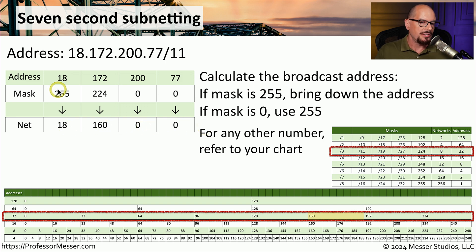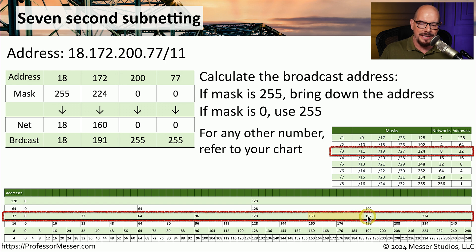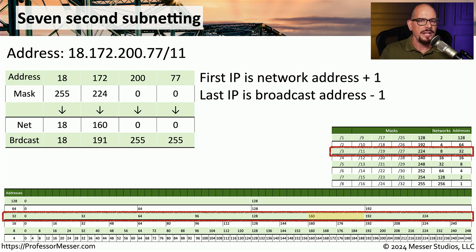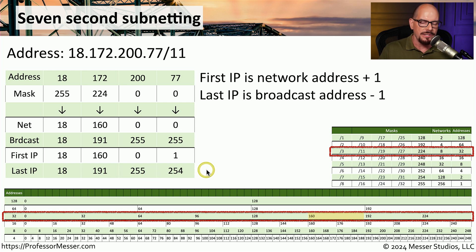To calculate the broadcast address: if the mask is 255, bring down the address; if the mask is zero, use 255. In the first octet we bring down 18, and in the third and fourth octets where the mask is zero we write 255. For the second octet, we go back to our chart and know that the range starts at 160 and the next range starts at 192, so the broadcast address for the previous range is 191. The broadcast address is 18.191.255.255. The first IP is 18.160.0.1, and the last available IP address is 18.191.255.254.